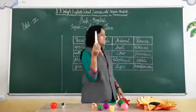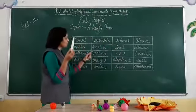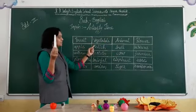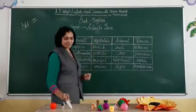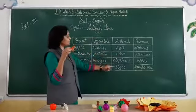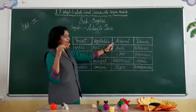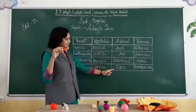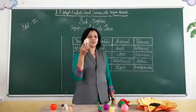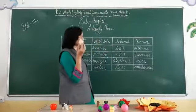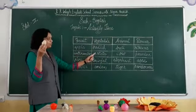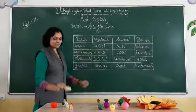Radish — radish is in the group of vegetable. Tiger — tiger is in the group of animal. Potato — potato is in the group of vegetable.